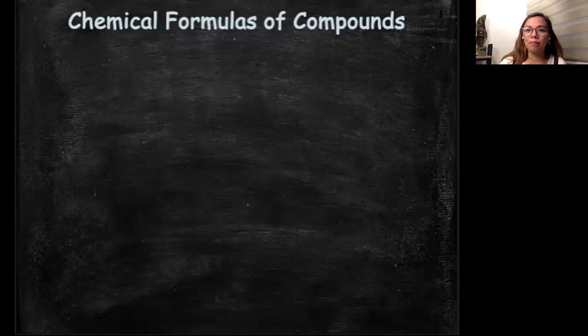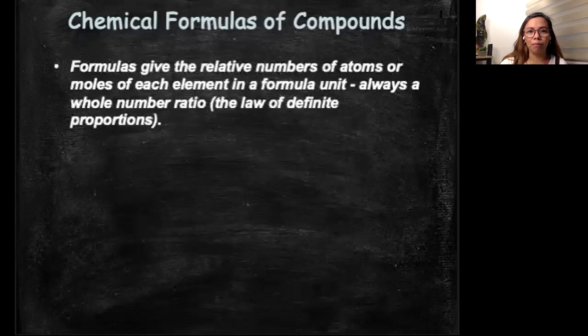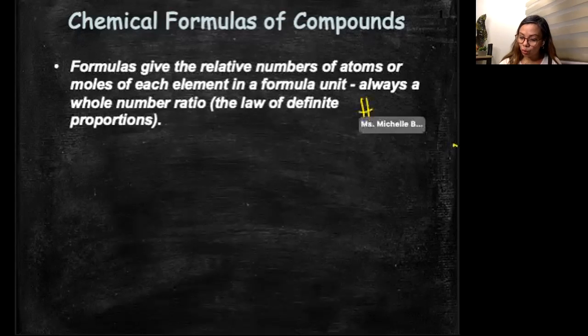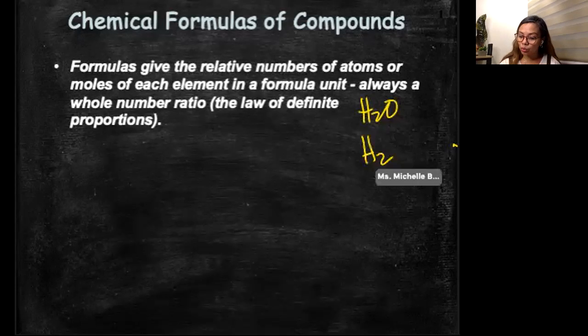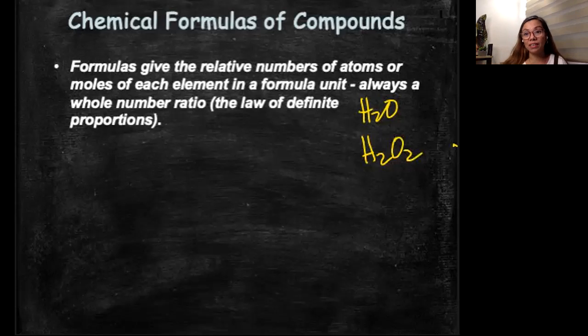So chemical formulas of compounds give the relative number of atoms or moles of each element in a formula unit. There's always a whole number ratio because this is based on the law of definite proportions, which means to say when we say water, that is H2O, 2 is to 1. And it's different from H2O2, 2 is to 2. That means a different substance. So whole number ratio of the chemical formula or of the substance.